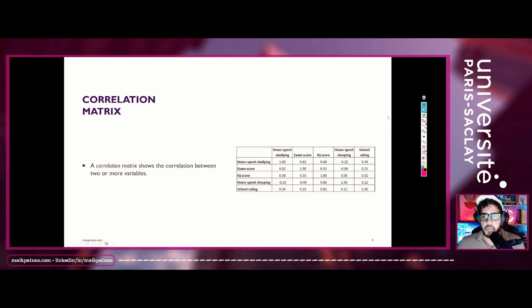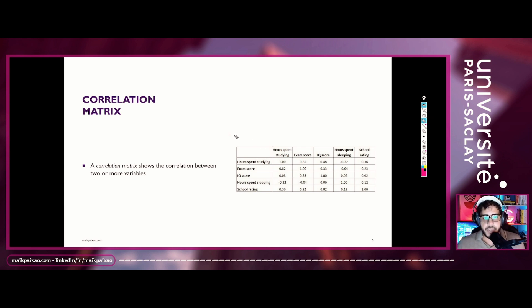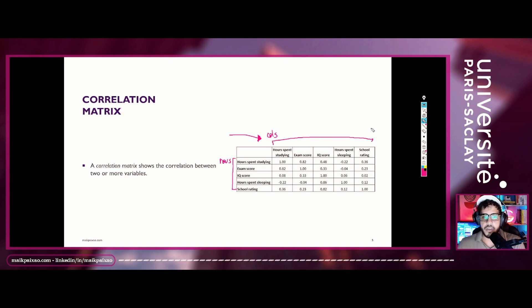Now let's talk about the correlation matrix, which is basically a representation that shows the correlation between two or more variables. Here we have an example of a correlation matrix obtained for a dataset from high school students. We have five variables represented by both columns and rows — five rows and five columns — with the same names for rows and columns.